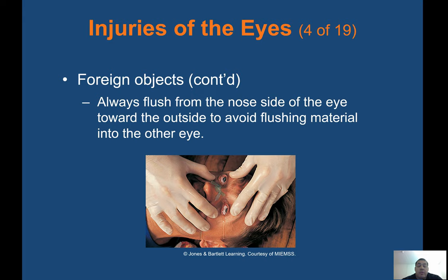Flush from the nose side of the eye toward the outside to avoid flushing material into the other eye. The nasal cannula is attached to an IV bag — each prong goes into each eye. When flushing, if one eye gets exposed, you're not going to drain water from that side going down because you'll get contaminants in the other eye. Then you've got two problems.